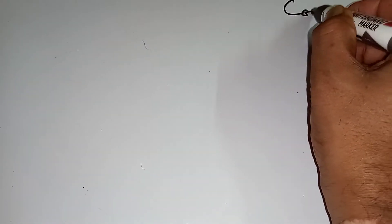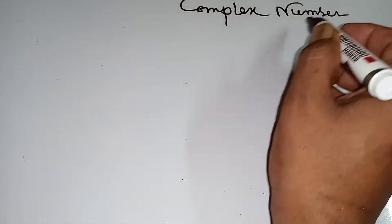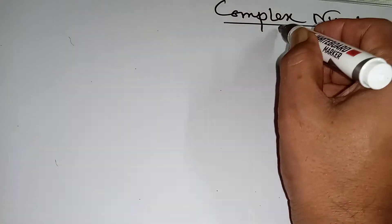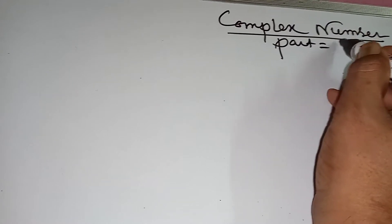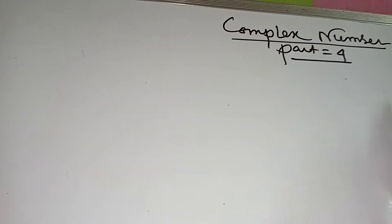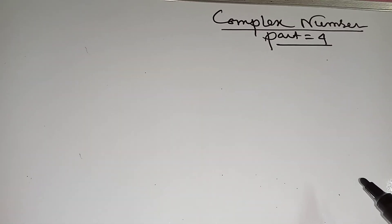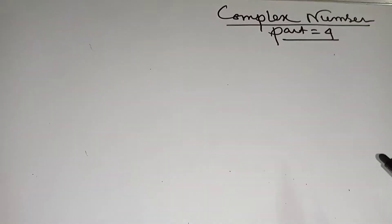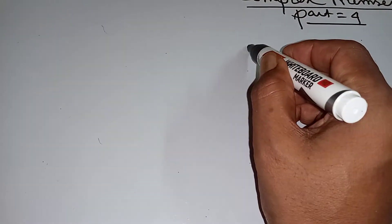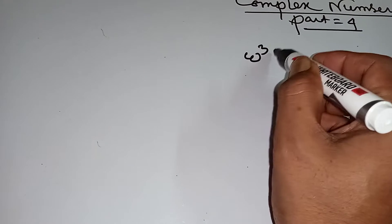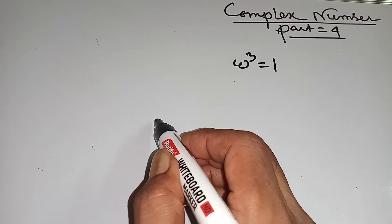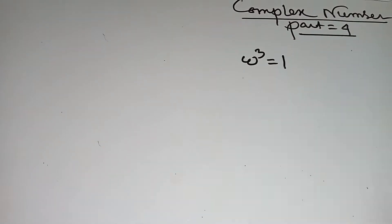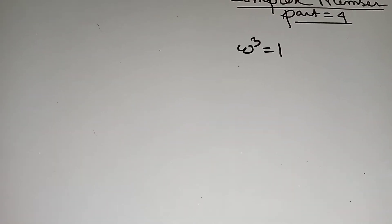Complex number, Part 4. Today I will discuss about omega. First, you know omega cube equals 1. This is the formula of complex number: omega cube equal to 1.